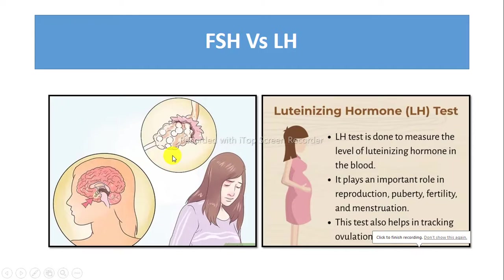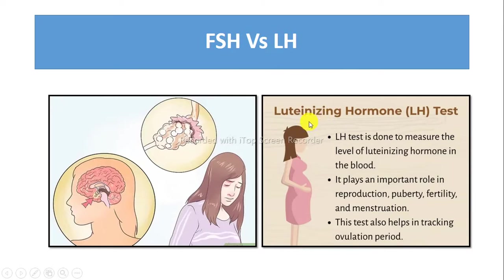We will understand the difference between FSH (follicle stimulating hormone) and LH (luteinizing hormone). FSH is also called folytropin, and LH is also called neutropin or interstitial cell stimulating hormone.